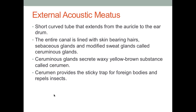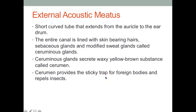The external acoustic meatus is a short curved tube that extends from the auricle to the eardrum. The entire canal is lined with skin bearing hairs. There are sebaceous glands and modified sweat glands called the ceruminous glands — these are the glands that produce the waxy yellow substance in your ear to repel insects and trap foreign bodies.